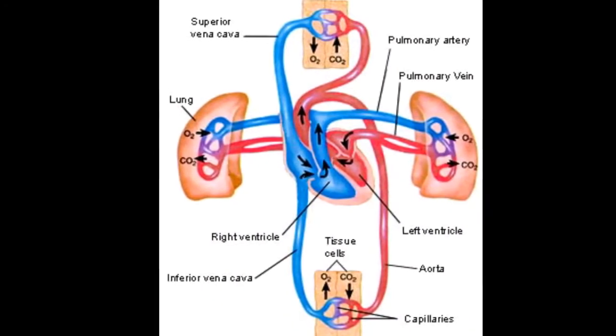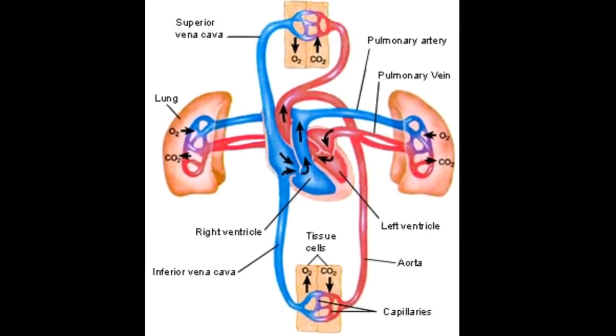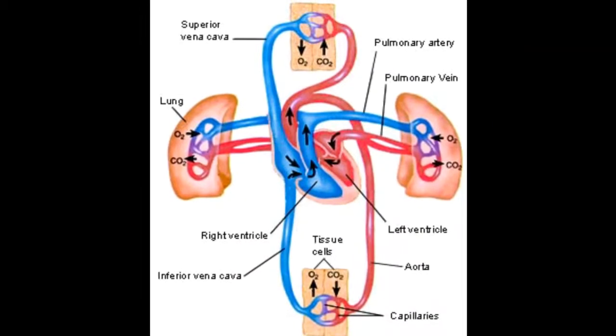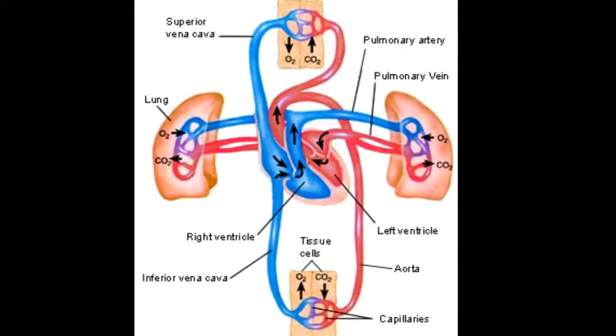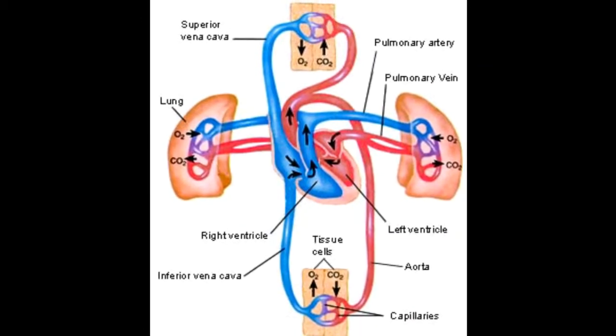The blood then goes through the semilunar valve, which is on the aorta, or called the aortic valve, and the aorta transfers all the blood throughout the body, where it drops off the oxygen and picks up carbon dioxide, and then the cycle starts again.